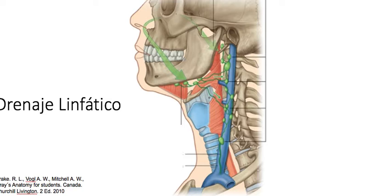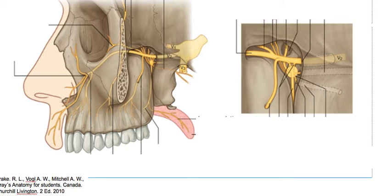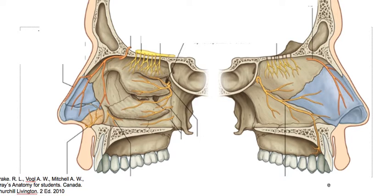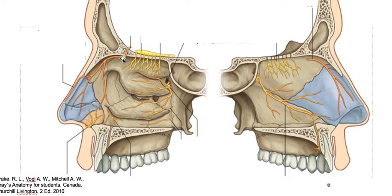Then the innervation. We have first the innervation from the ethmoidal nerves. This is the anterior ethmoidal nerve accompanying the anterior ethmoidal artery. It also has a terminal branch passing between the cartilage and the bone — this is the external branch and it innervates only the skin. They also perforate the cribriform plate and join the anterior ethmoidal artery.